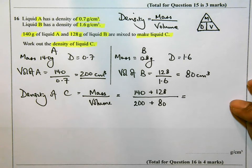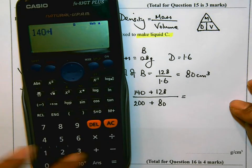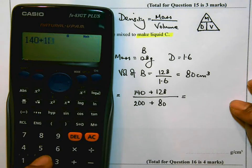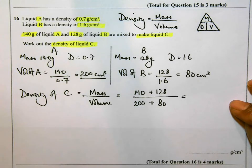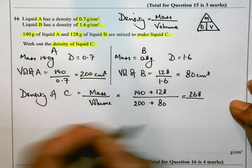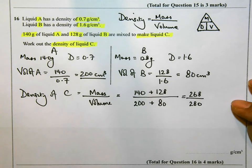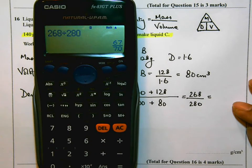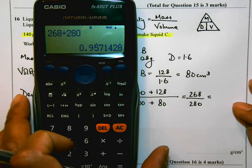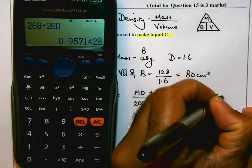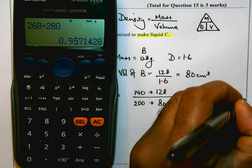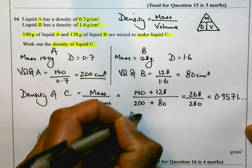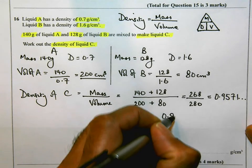I am just going to do this. 140 plus 128 equals 268 over 280. I am doing my division, 268 divided by 280. That gives me 0.9571 and so on. I am going to round it to three decimal places, just for convenience. And in my answer space, I will put 0.957. And that's going to be grams per centimeters cubed.